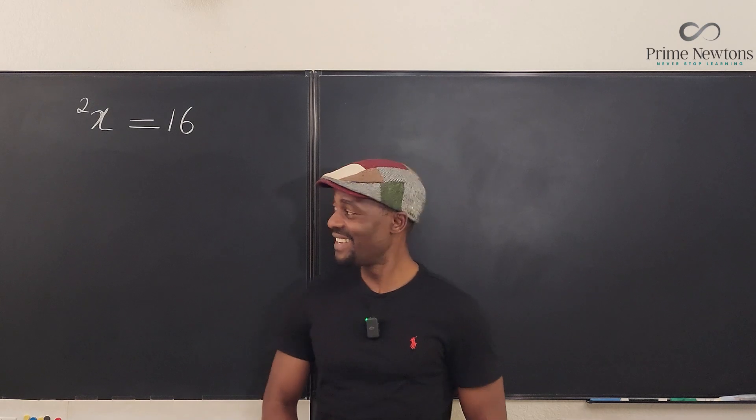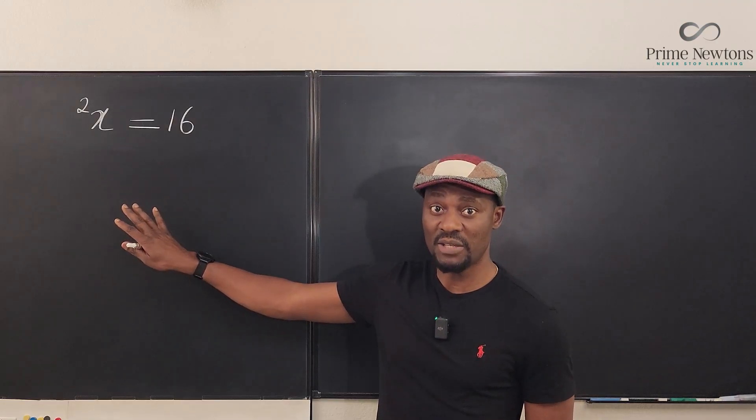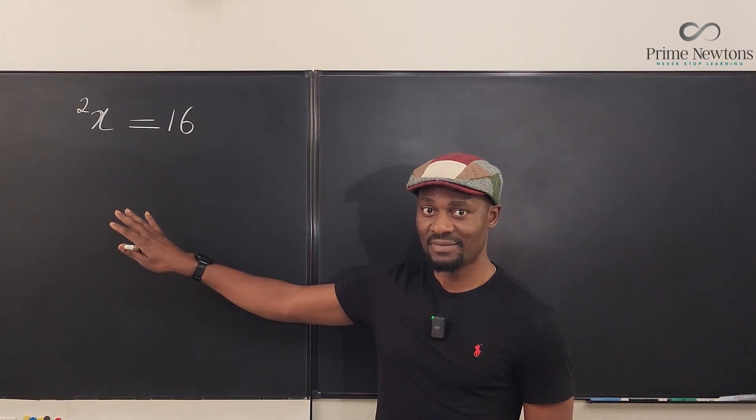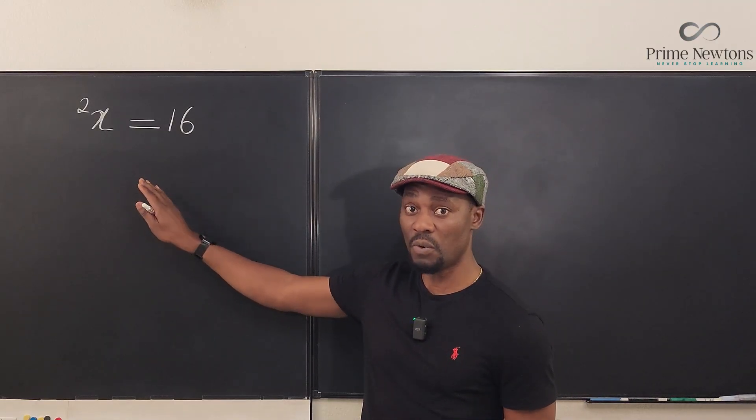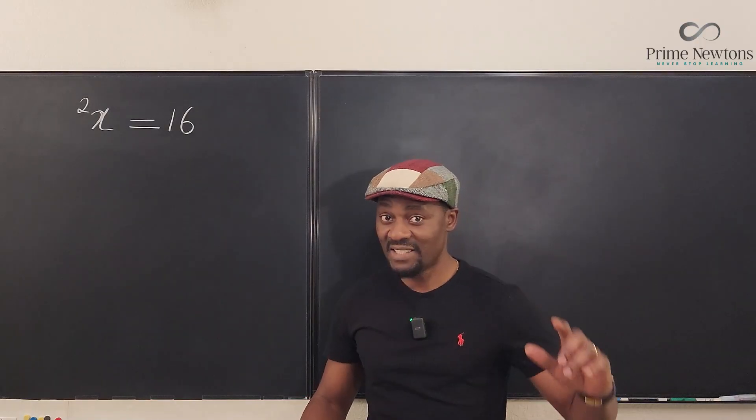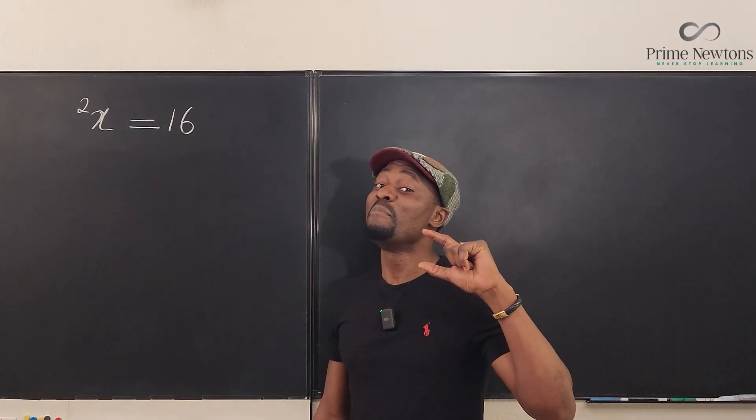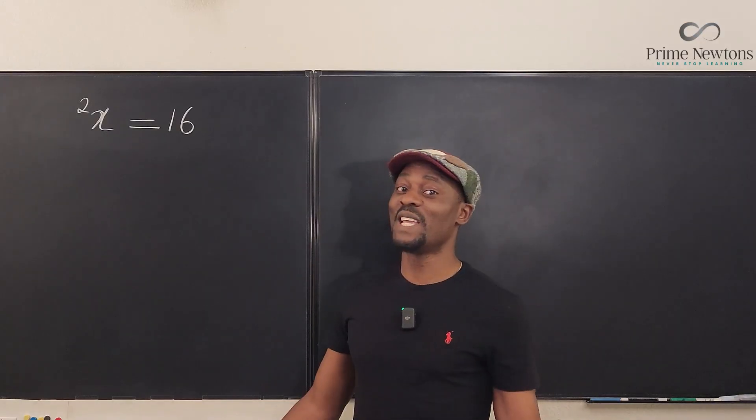Welcome to another video. We're going to solve this equation, and this is not an exponential equation. So the answer to this is not 4 and it is not minus 4. You cannot take the square root of both sides. It is the second power tower of x, or the tetration of x.